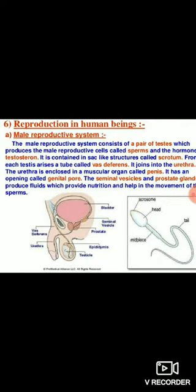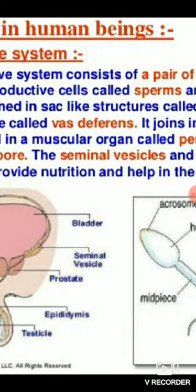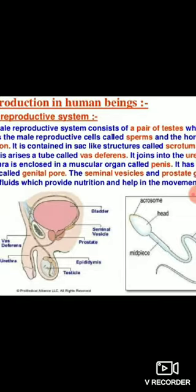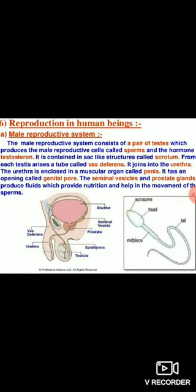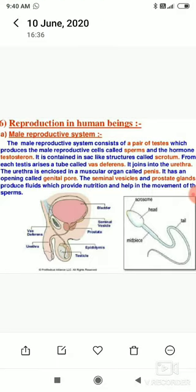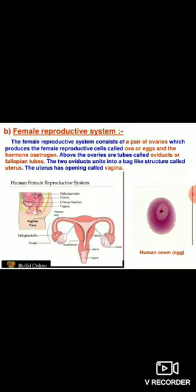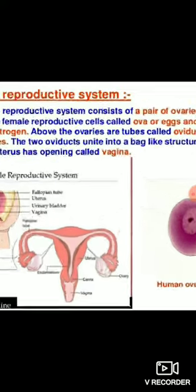The vas deferens is also joined with two glands — the seminal vesicle and the prostate gland. Both of these glands provide nutrition and help in the movement of the sperms. The vas deferens, which carries the sperms, joins with the urethra, which is enclosed in a muscular organ called the penis. That is the structure of the male reproductive system.